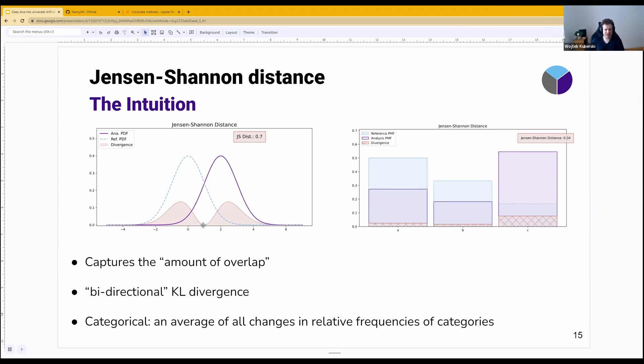So you see here, when they are exactly the same, it goes to zero. Here they are vastly different from each other because the analysis distribution almost doesn't exist, and the reference distribution is quite dense. So the divergence measure is going to be quite high.